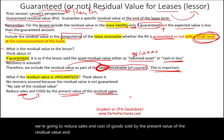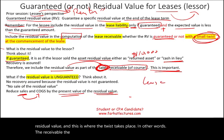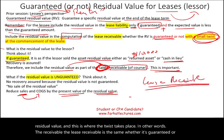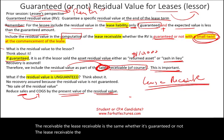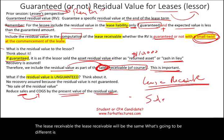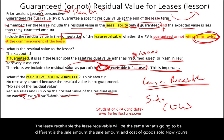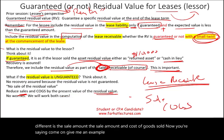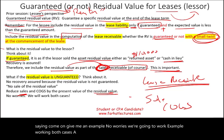This is where the twist takes place. The lease receivable is the same whether the residual value is guaranteed or not. What's going to be different is the sale amount and cost of goods sold. We're going to work a comprehensive example illustrating both cases from the lessor's perspective.